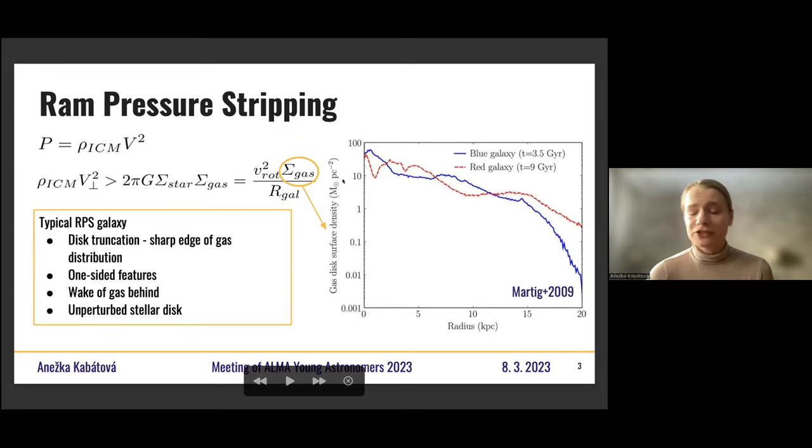So let's talk about hydrodynamical stripping, or specifically ram pressure stripping. So this is a process that is caused by the galaxy that is moving with a very high velocity of several hundreds kilometers per second through the cluster environment. And its interaction with the intracluster medium, this is the hot and dense gas that's surrounding it. So here's the formula. You can see that the pressure is dependent on the density of the ICM and also the velocity of the falling galaxy.